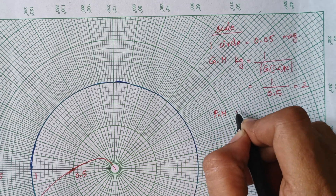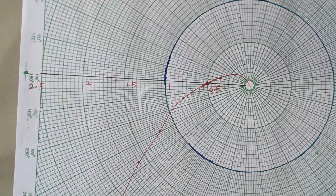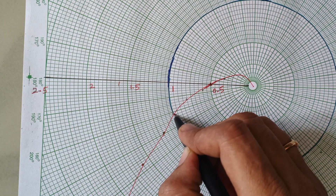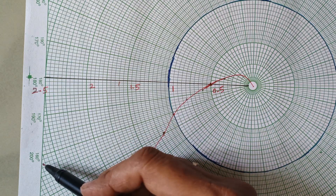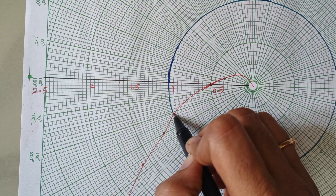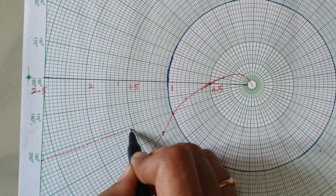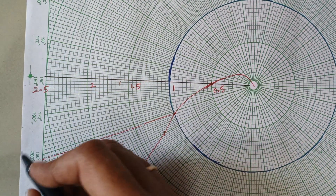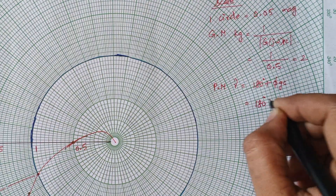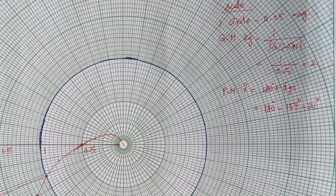The phase margin is given by 180 degrees plus the phase angle at the gain crossover frequency. The polar plot cuts the unity circle at a particular point; measuring the angle there gives approximately minus 159 degrees. So phase margin = 180 minus 159 = 21 degrees. We have now determined both the gain margin and phase margin.